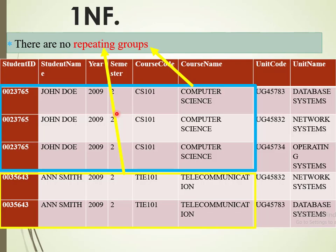We begin with the first rule: there should be no repeating groups. You can see that we are being forced to repeat the student ID, student name, year, semester, course code, and course name. This entire set is being repeated so that we are able to populate the three different units that a student is undertaking. Similarly, for Anne Smith, we are being forced to repeat all these sets of data to accommodate the two units the student is undertaking. This is what we are referring to as a repeating group — a set of fields or domains being repeated to accommodate other sets of data.